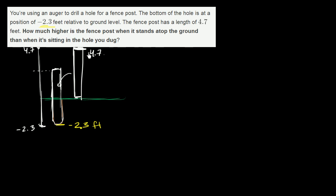They're just asking how much does the top go down when it's sitting in the hole you dug. It's clear that this distance is going to be 2.3 feet — it goes 2.3 feet lower when you stick it into the hole. So the fence post is 2.3 feet higher when it stands atop the ground than when it is sitting in the hole.